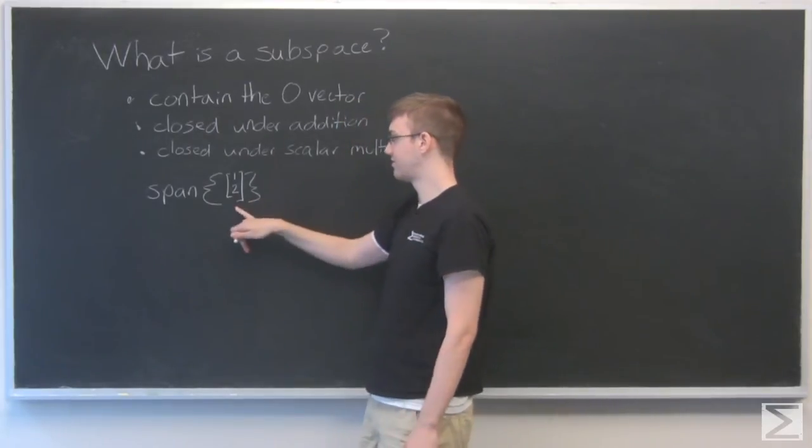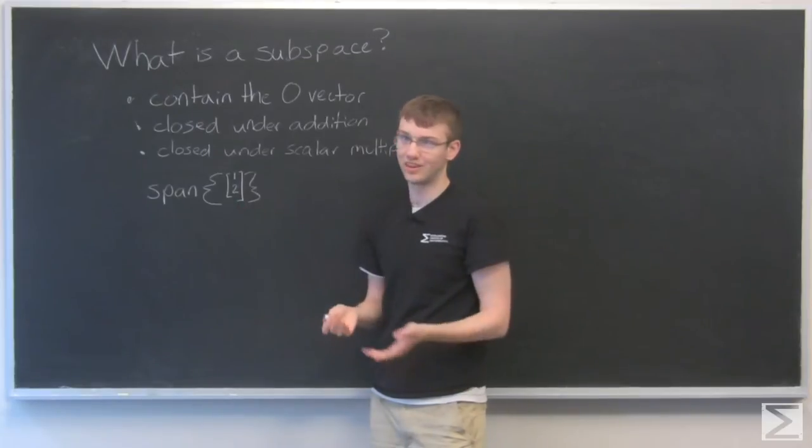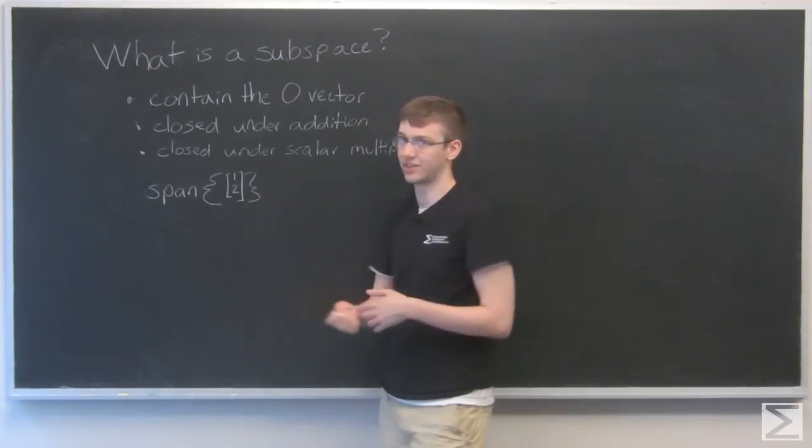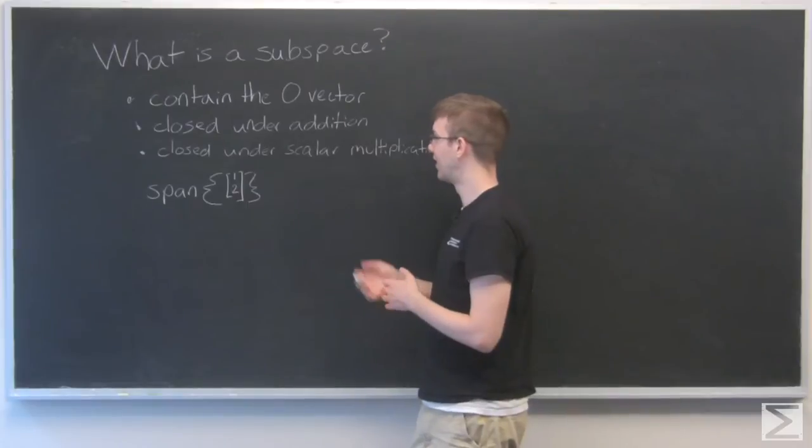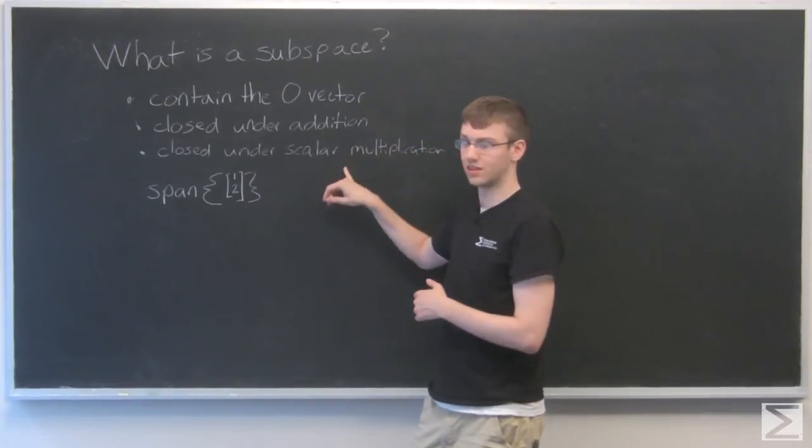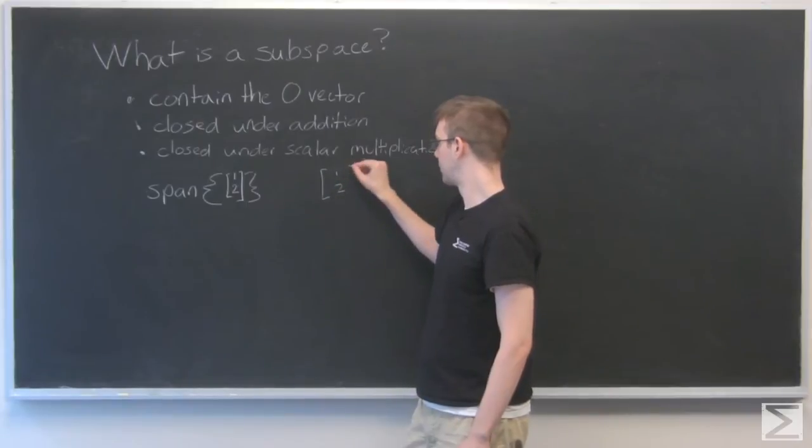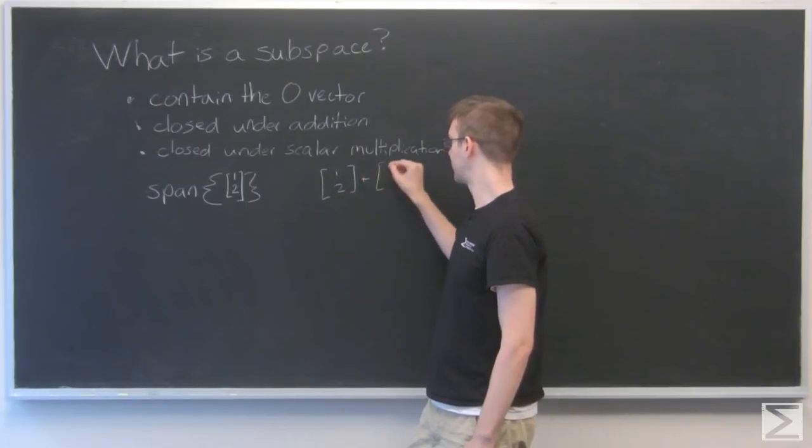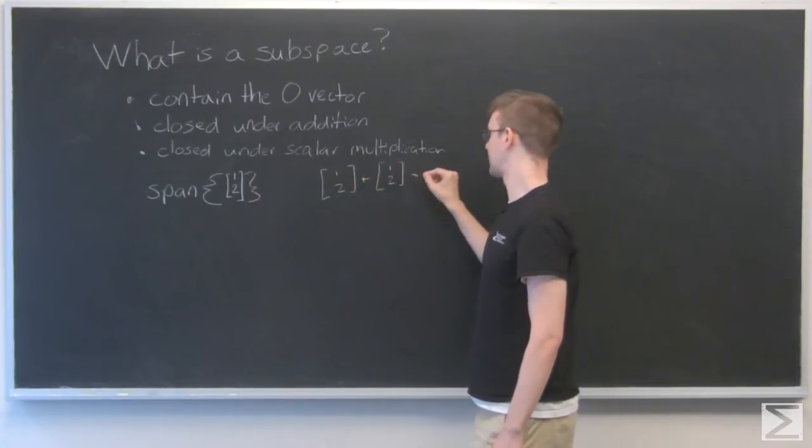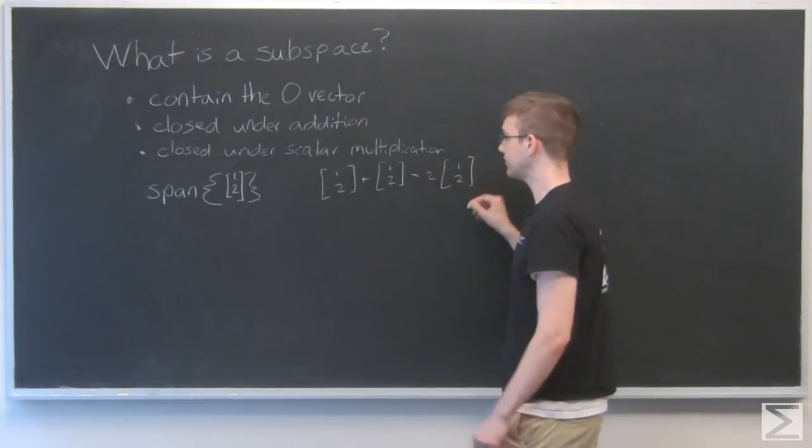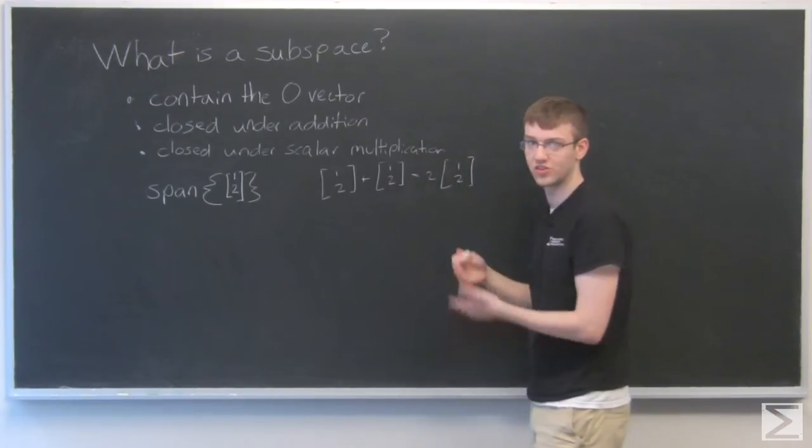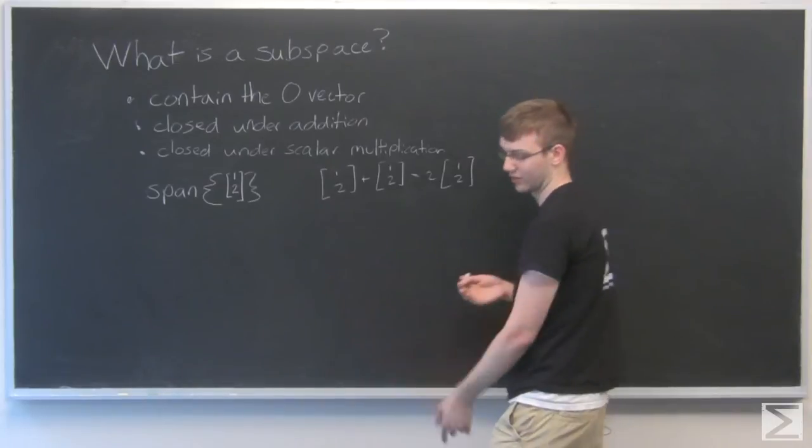If we add any combination of this vector to itself, I mean this vector plus this vector, that's still within the span. That's basically the same thing as the third thing right here. Where 1, 2 plus 1, 2, that's just 2, 1, 2. So addition, scalar multiplication, it's all basically the same thing when we only have one vector.